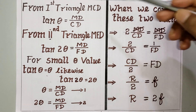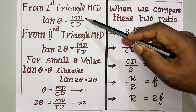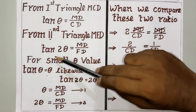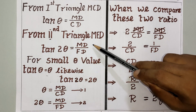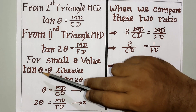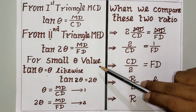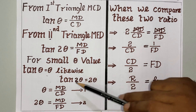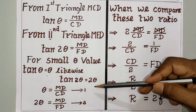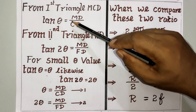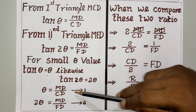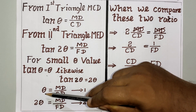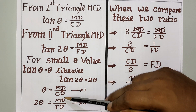From the first triangle MCD: tan θ = MD / CD. From the second triangle MFD: tan 2θ = MD / FD. For small angles, tan θ ≈ θ and tan 2θ ≈ 2θ. So the first equation becomes θ = MD / CD.